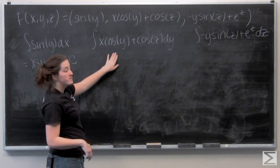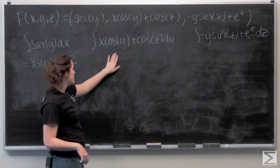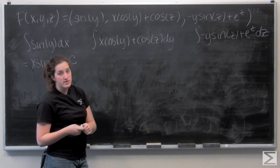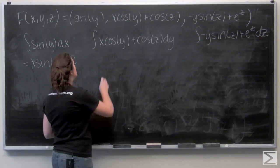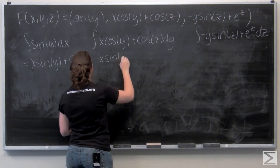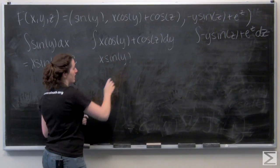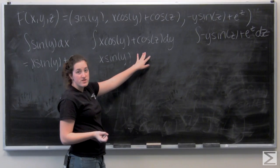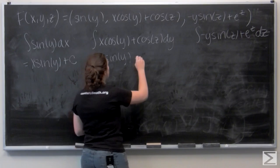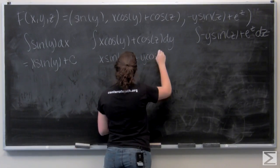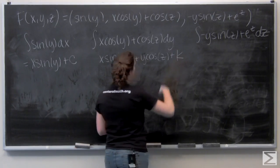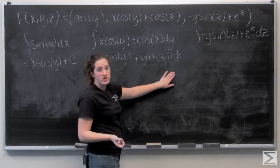Now let's do the second one. I'm integrating with respect to y. The integral of x cosine y is like the integral of cosine y, which is sine of y — so I've got x sine of y. And then cosine z is treated like a constant, so I've got y cosine z when I integrate. Plus some arbitrary real number k.